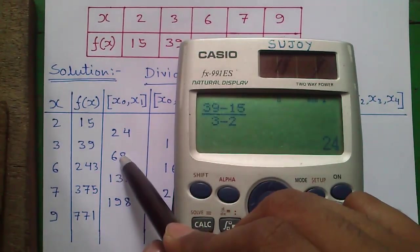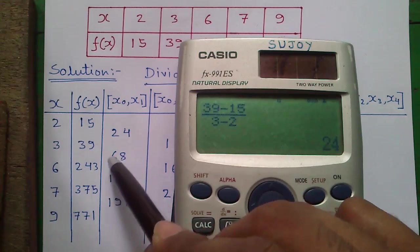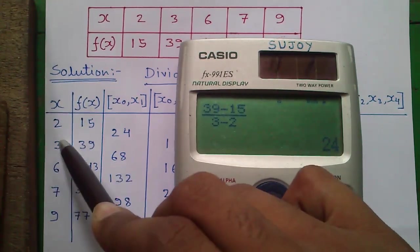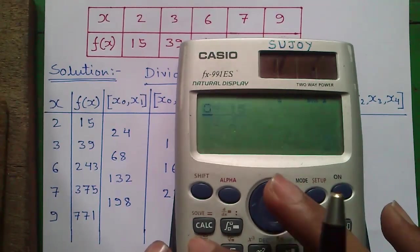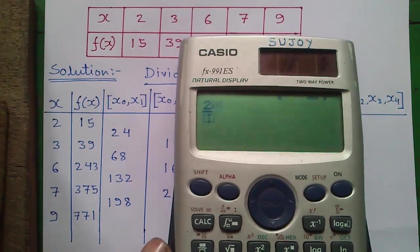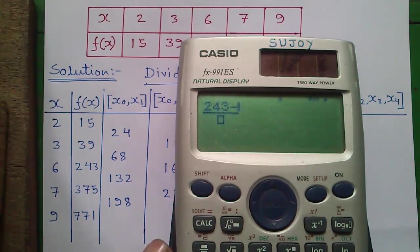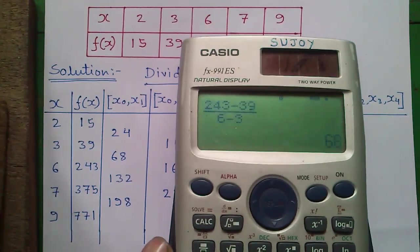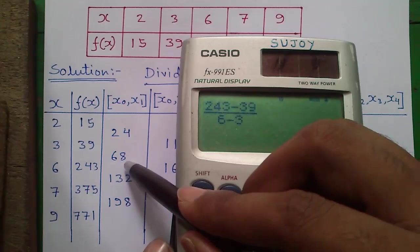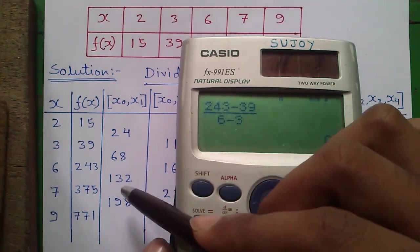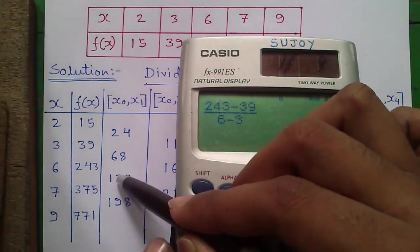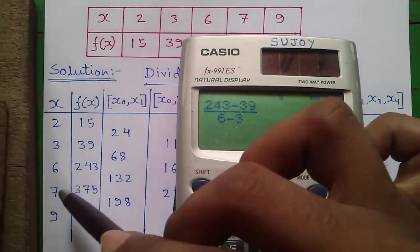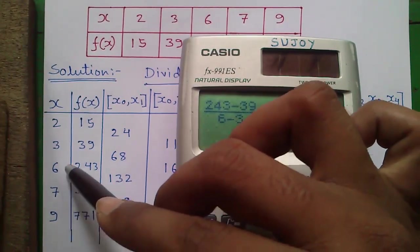Similarly, the next number can be obtained by 243 minus 39 divided by 6 minus 3, which equals 68. Similarly, the next number can be obtained by 375 minus 243 divided by 7 minus 6.